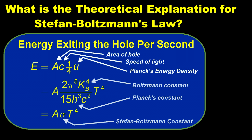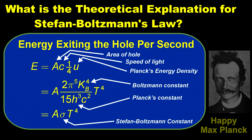Replacing u with our energy density formula gives a result that made Max Planck a happy kid. The energy exiting the hole per second is the area of the hole times a constant times the temperature to the fourth power. Max Planck had derived a T-to-the-fourth law from his black body theory. Ta-da!